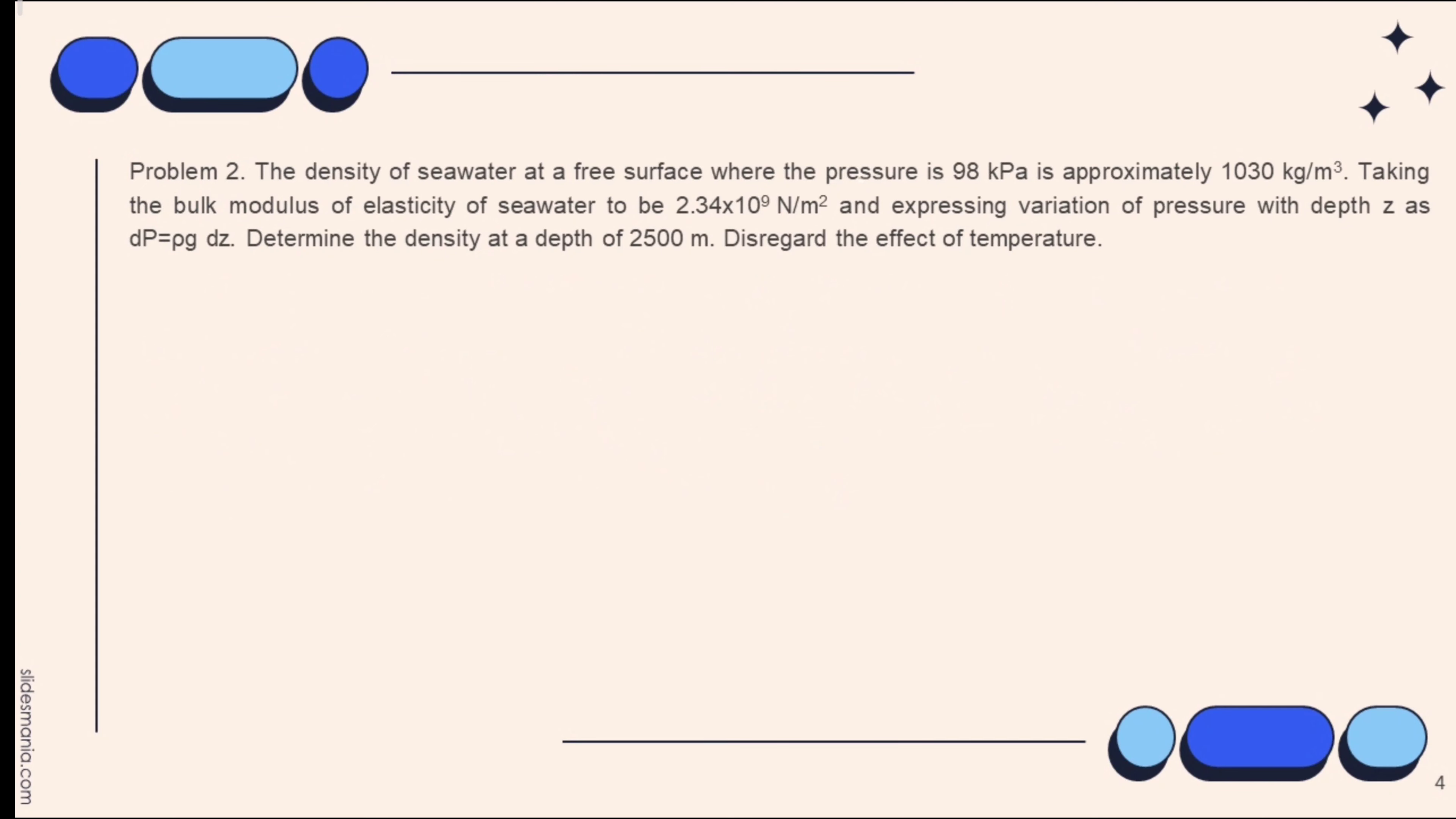And finally, to solve for our problem 2, given that atmospheric pressure equals 98 kilopascal, density equals 1,030 kilogram over meter cube, bulk modulus of elasticity equals 2.34 times 10 raised to 9 newton over meter squared, and the depth z equals 2,500 meter.